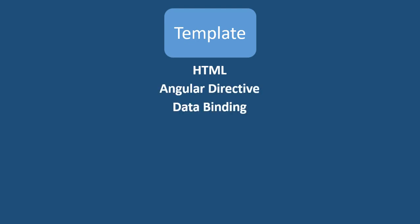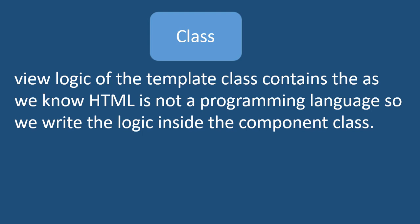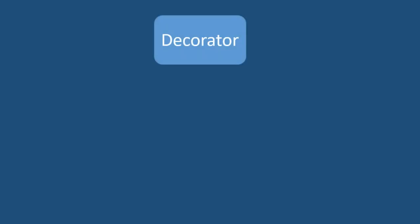The class contains the view logic of the template. As we know, HTML is not a programming language, so we write the logic inside the component class. Like other object-oriented programming languages, a class contains properties and methods. Normally, properties contain data for the templates and methods contain the logic for the view. In Angular we use TypeScript for defining the classes.